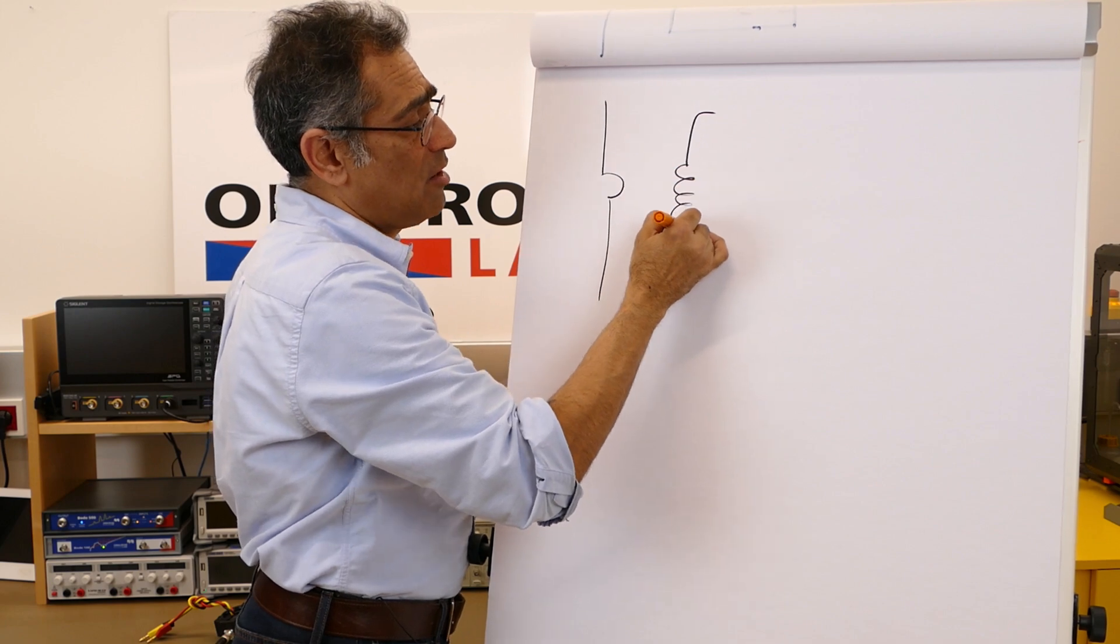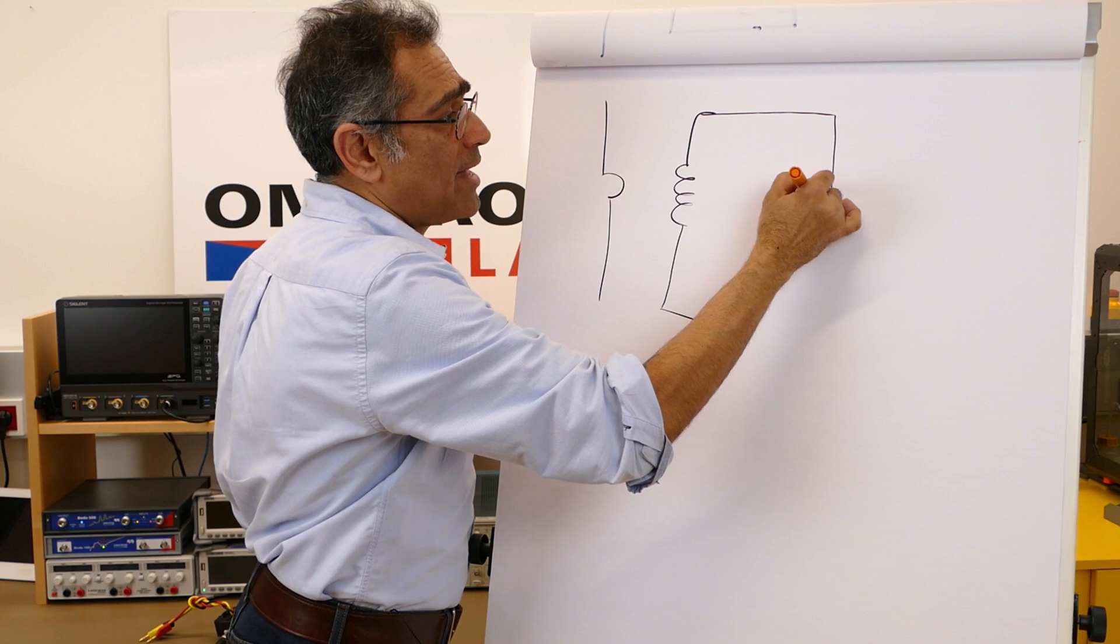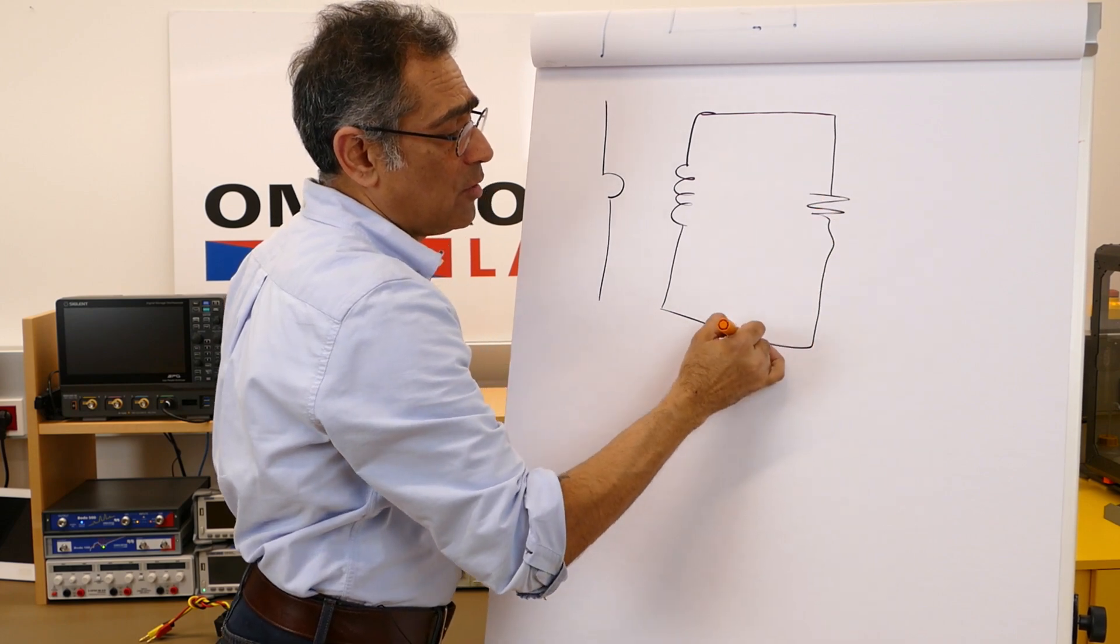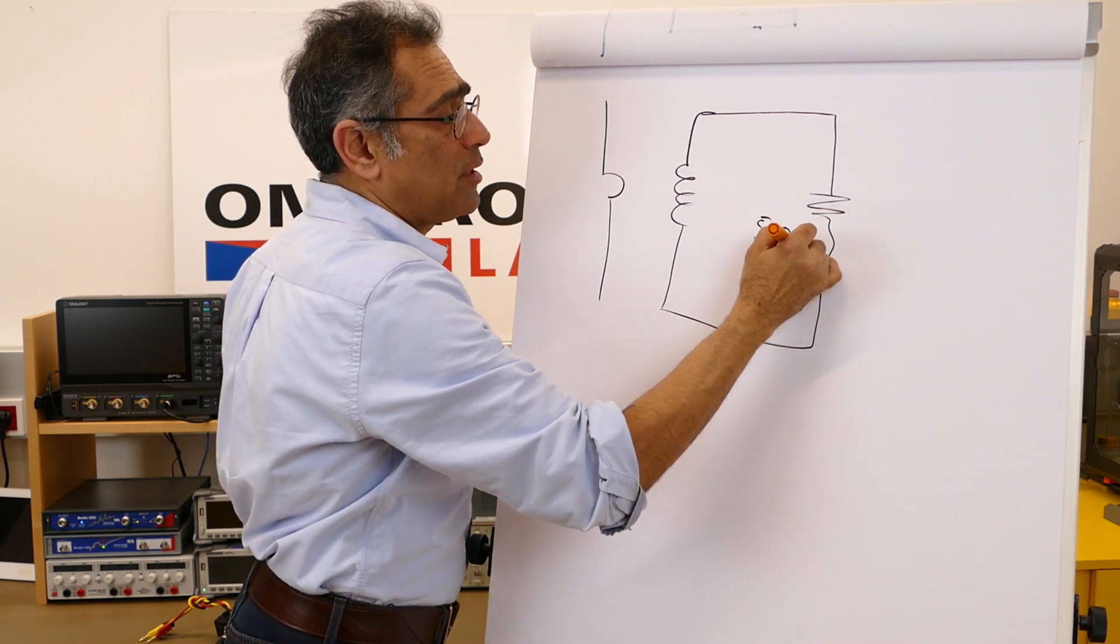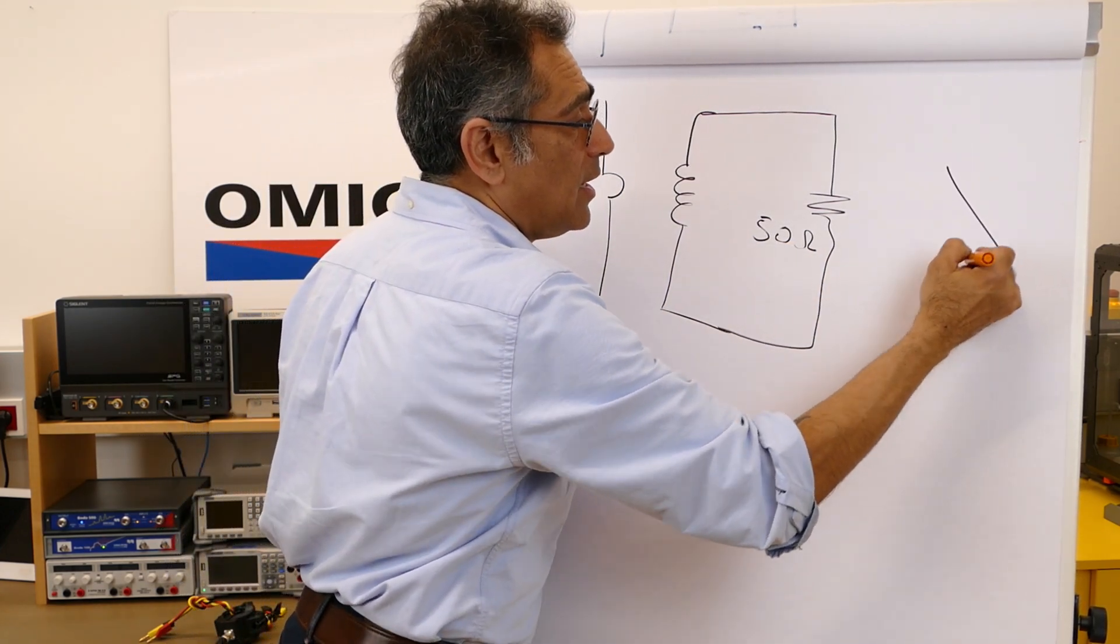Then you have got several turns of secondary inside of the current clamp and then that will go to a 50 ohm impedance of the spectrum analyzer, and what you are doing here is that you're sitting here and looking at the voltage across this.